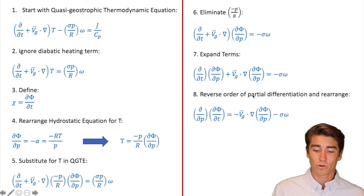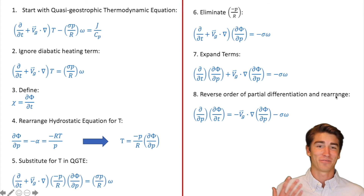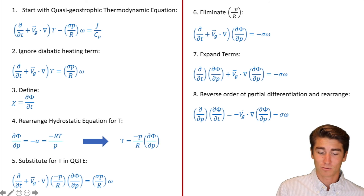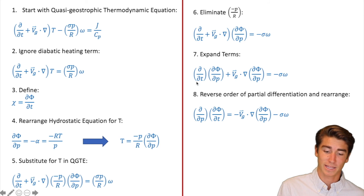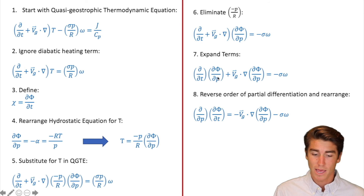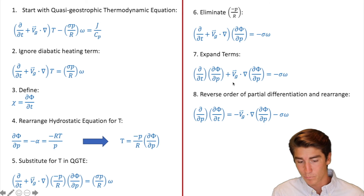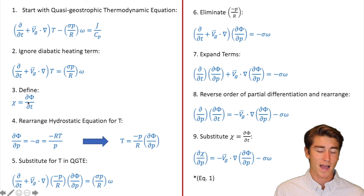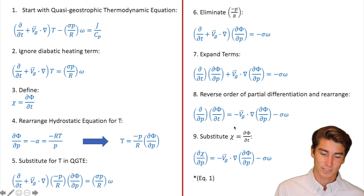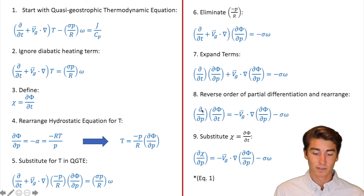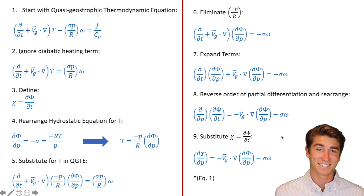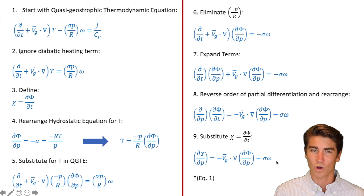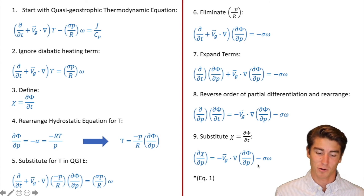In step eight we are going to reverse the order of partial differentiation and rearrange. All you're going to do is take that dp, put it over there, take that dt, put it over there — you're just switching those two terms. And then you're taking your advection term and putting it over on the right side. Nothing too difficult. Remember in step three we defined chi equals d-phi/dt, so we're going to substitute that in. Where do you see d-phi/dt in this equation? Right there. So that just becomes a chi, and with the d/dp it becomes d-chi/dp. The right-hand side stays the exact same. We're going to call this equation one.